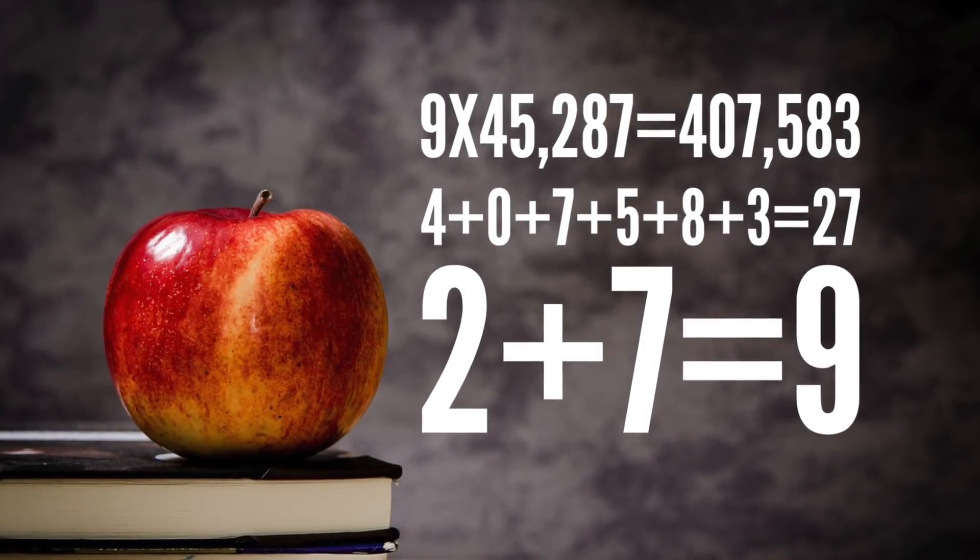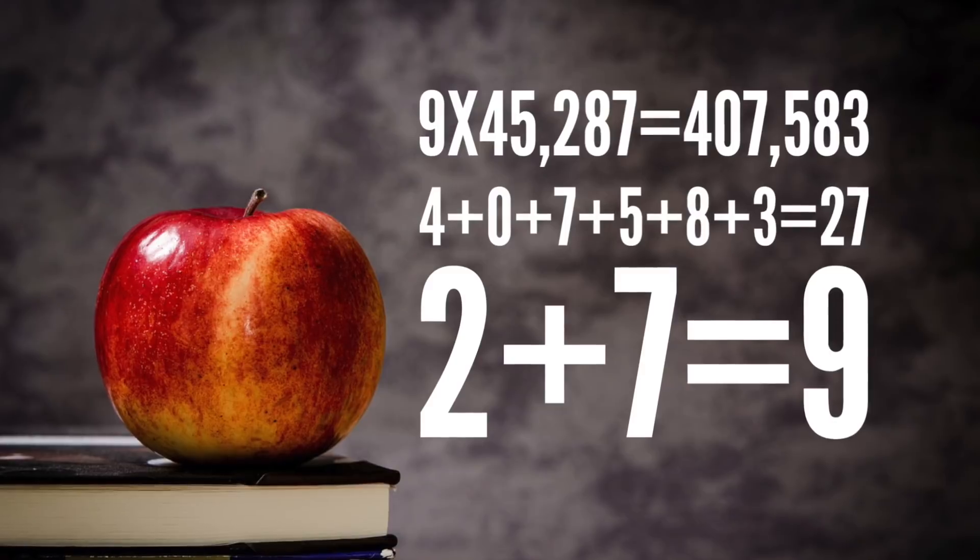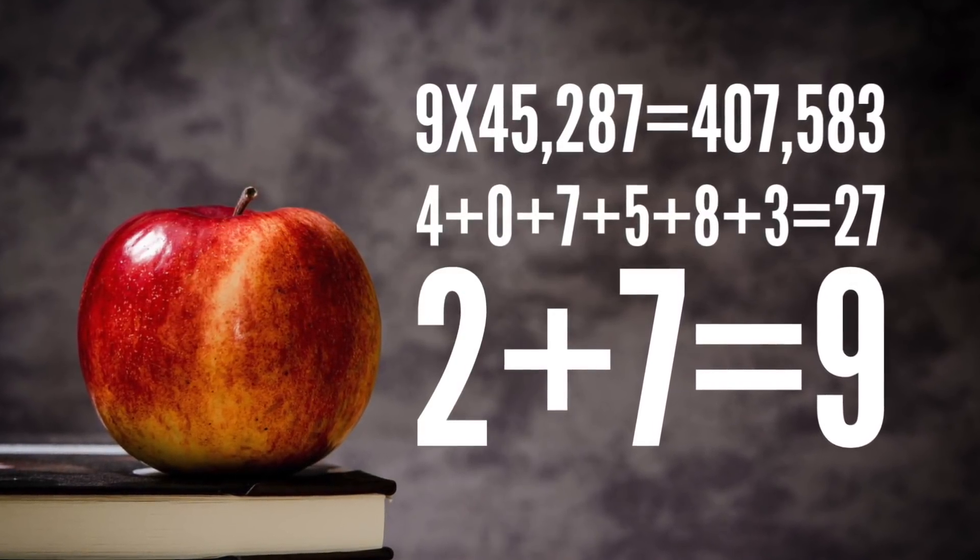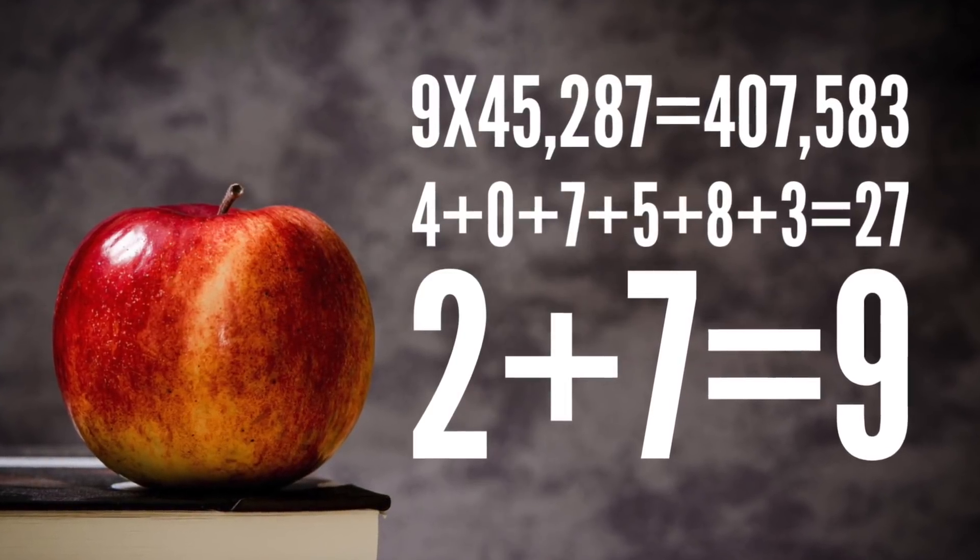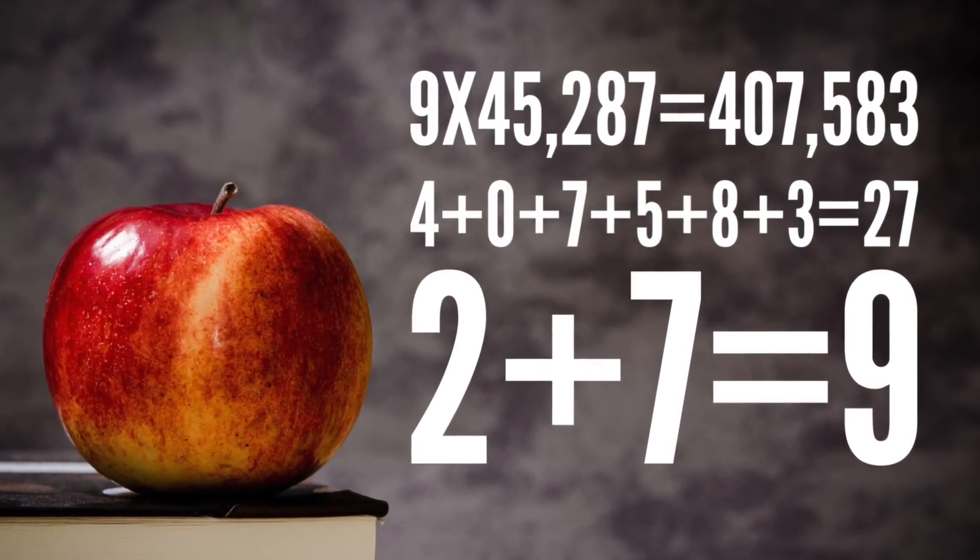Okay, 9 times 45,287 comes to 407,583. 4 plus 0 plus 7 plus 5 plus 8 plus 3 equals 27. 2 plus 7 equals 9.